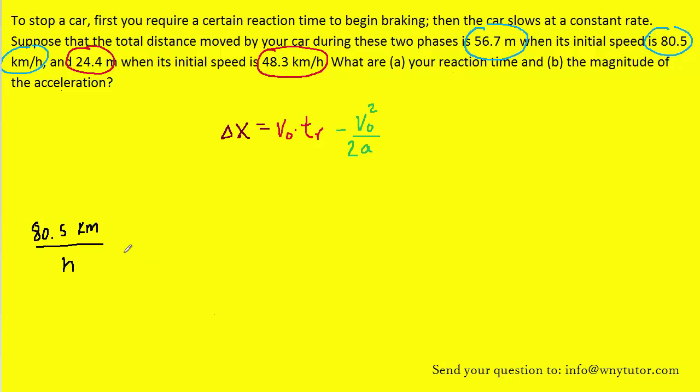We'll show the conversion for the 80.5 kilometers per hour only. The other conversion will be similar. We know that one kilometer contains 1,000 meters, and one hour contains 3,600 seconds. So these hours will cancel, the kilometers will also cancel. That's going to leave us with meters per second. Let's just go ahead and process this. We get 22.4 meters per second. So just keep in mind, instead of calling this 80.5 when we plug in, we're going to use 22.4. A similar conversion will be used to change the 48.3 kilometers per hour into meters per second.